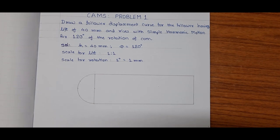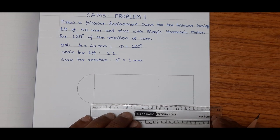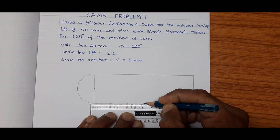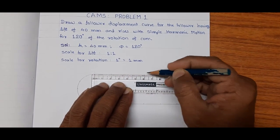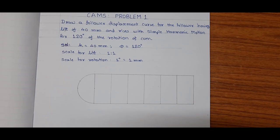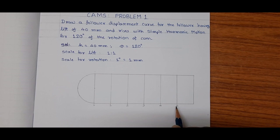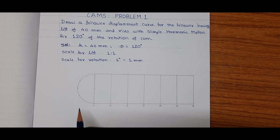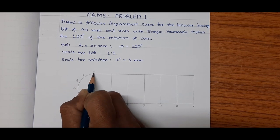Similarly, divide this length into the same equal number of parts, that is 6. Number them like this: 0, 1, 2, 3, 4, 5, 6. Similarly, number the parts of the semicircle 1, 2, 3, 4, 5, 6.